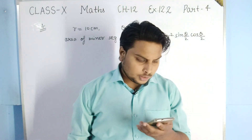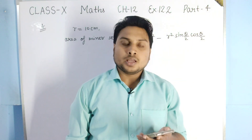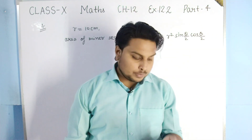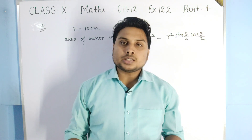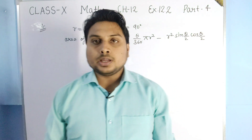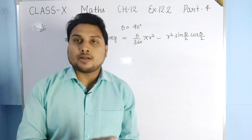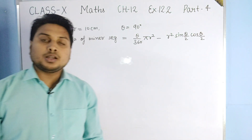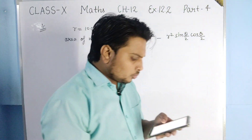For the major segment, the angle will be 360° − 90° = 270°. So apply theta = 270° in the sector formula to find the major sector area. That is the method to solve this question.